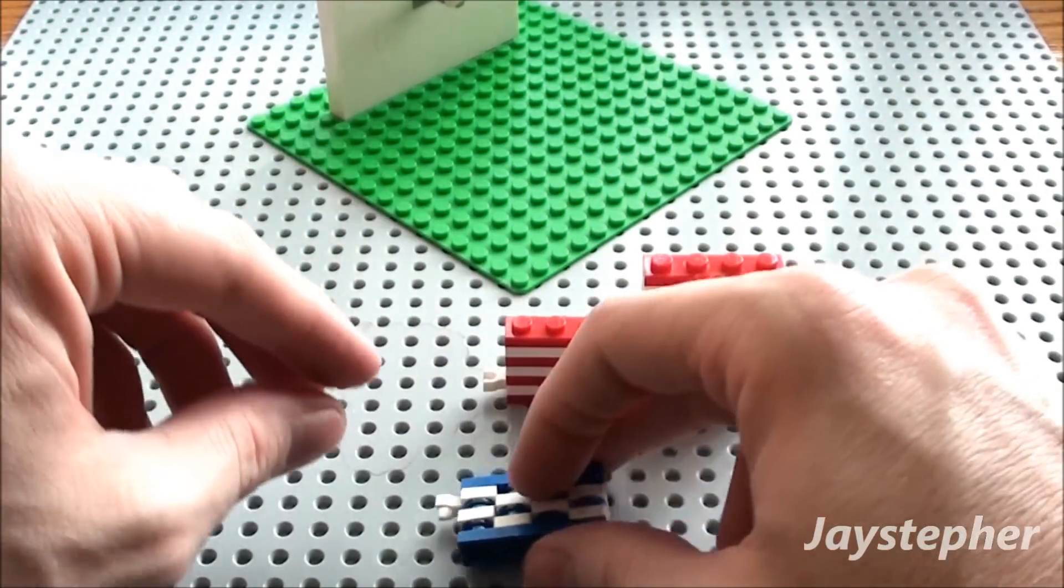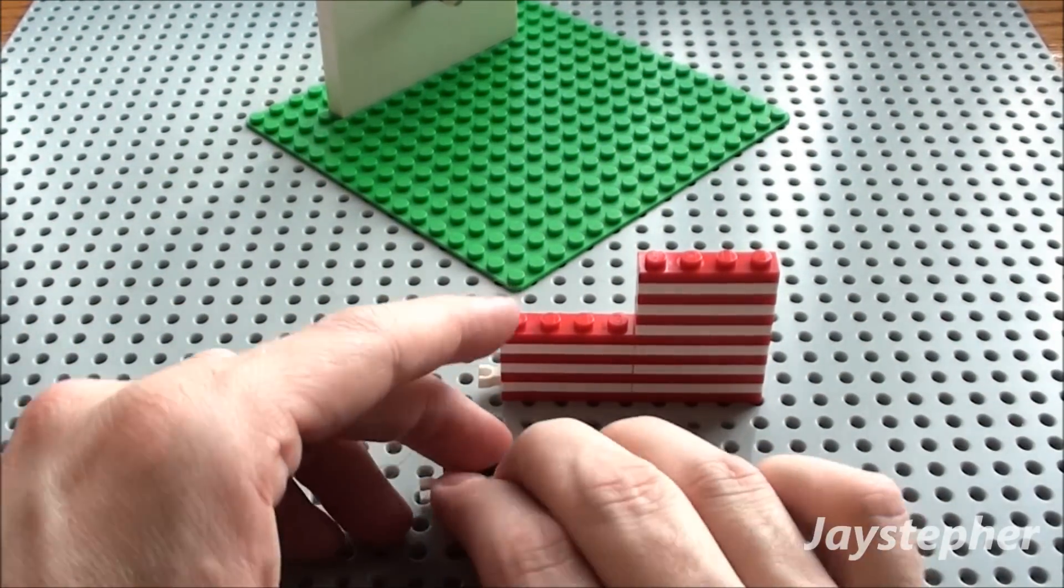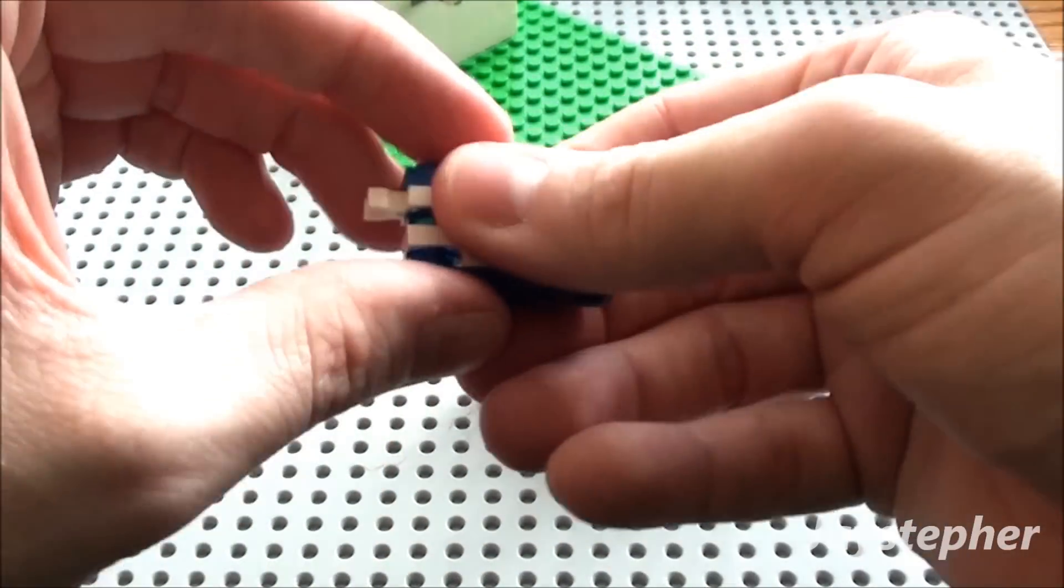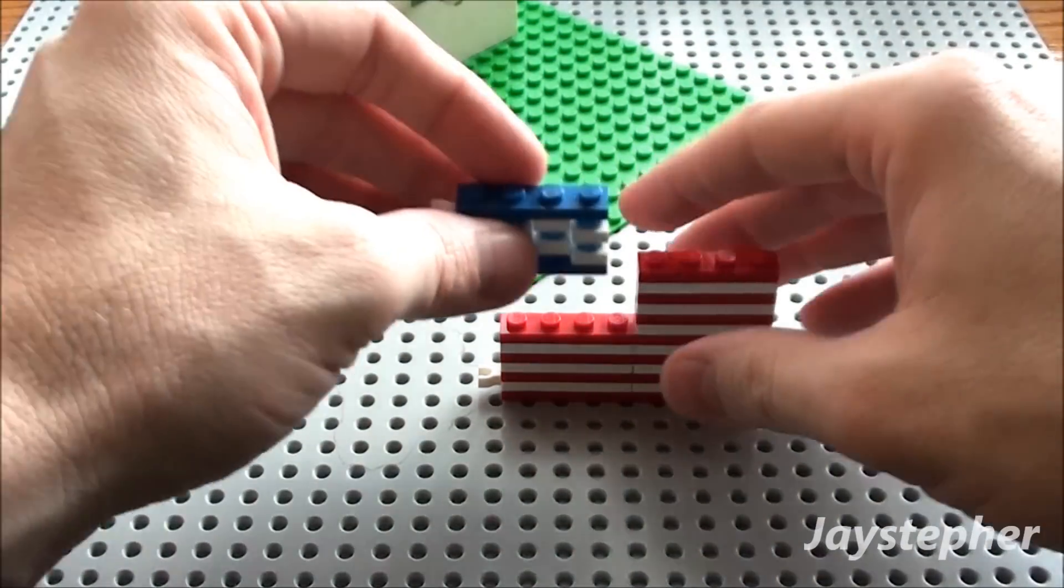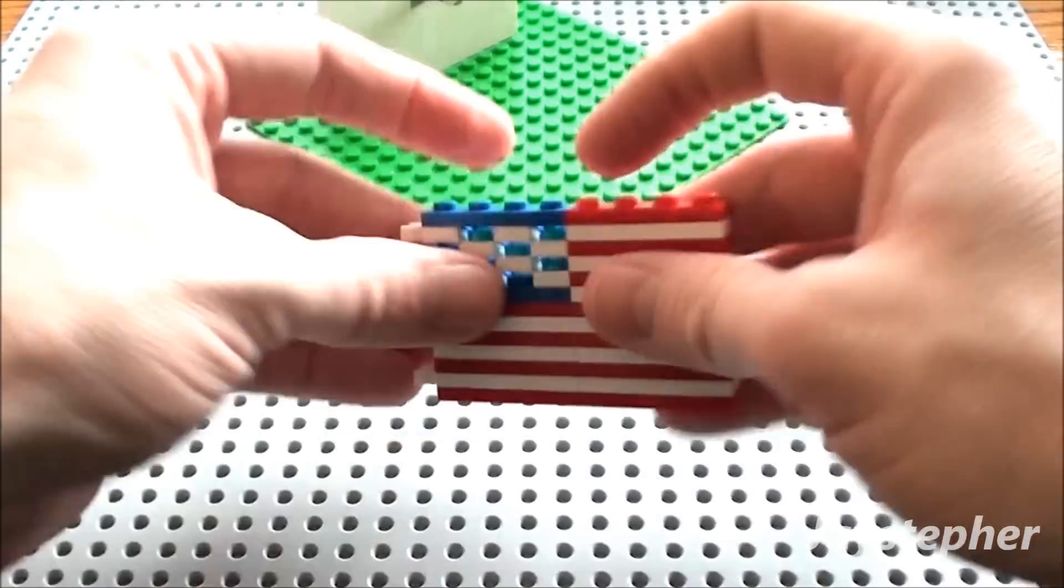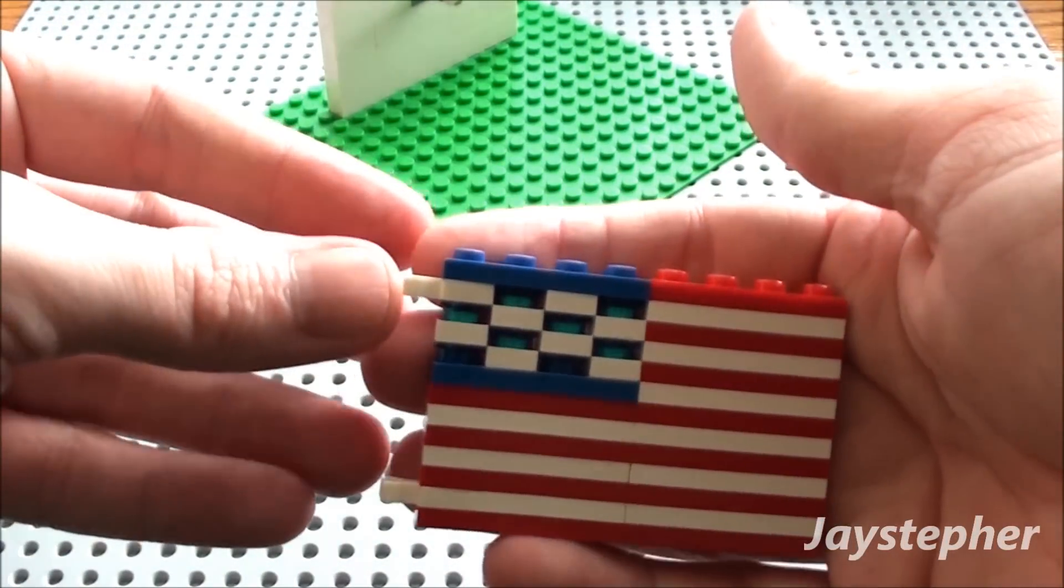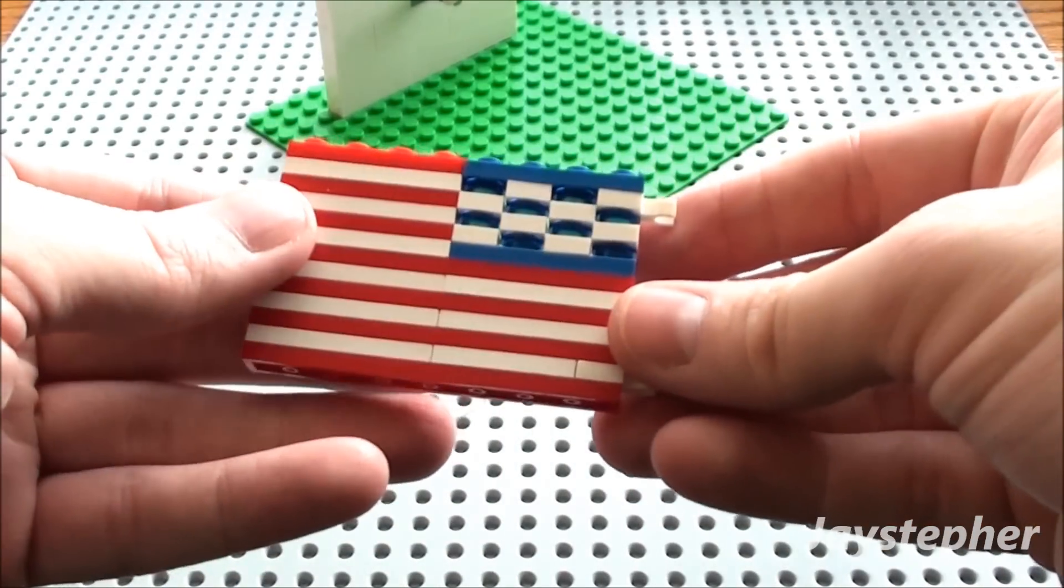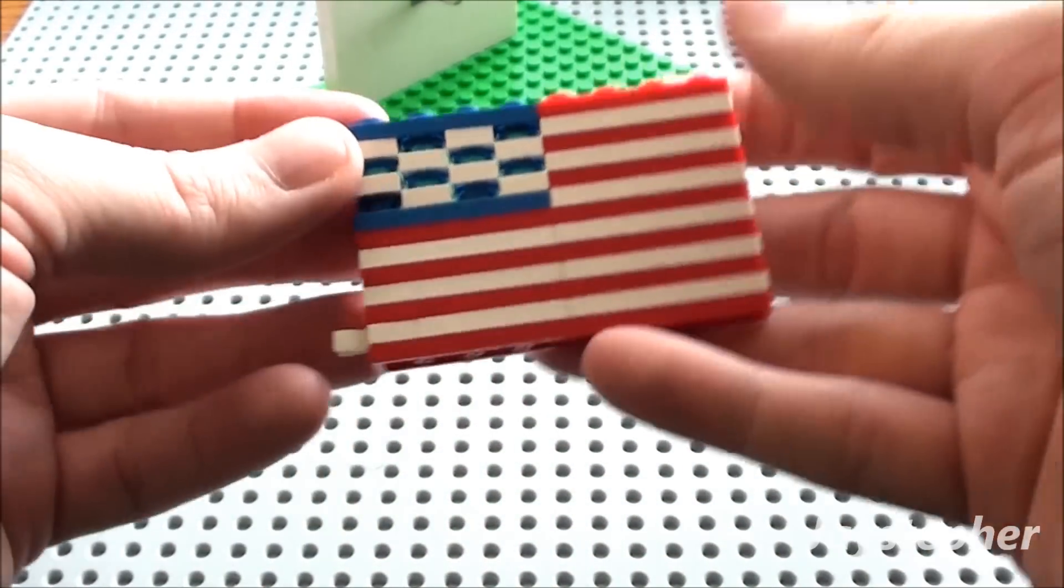Now I'm going to take this and press it down kind of on the table just to flatten all these pieces out. I'm simply going to insert it here. So that's our American flag. You can do this any way you want.